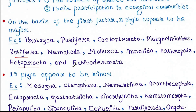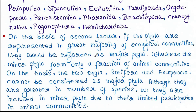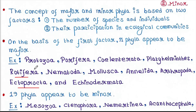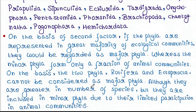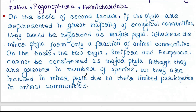On the basis of the second factor, if the phyla are represented in the great majority of ecological communities they would be regarded as major phyla, whereas the minor phyla form only a fraction of animal communities. On this basis, the two phyla Rotifera and Ectoprocta cannot be considered as major phyla — although they are greater in number of species, they are included in minor phyla due to their limited participation in animal communities, as members of these two phyla are found in very few communities.